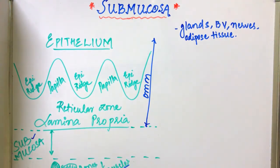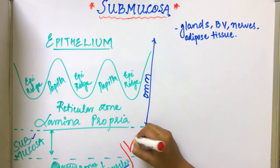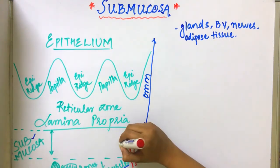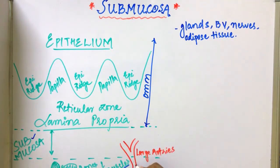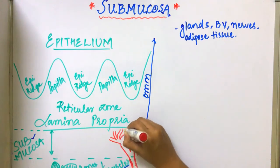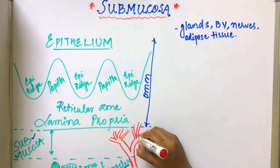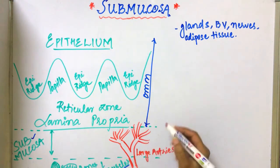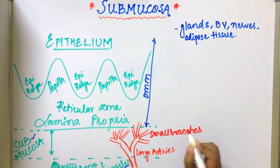Now let's talk about blood supply. Large arteries come in, and in the submucosa these large arteries divide into smaller branches.